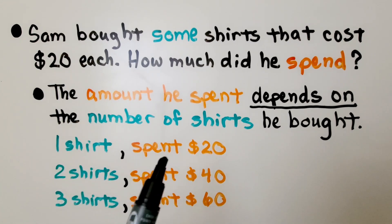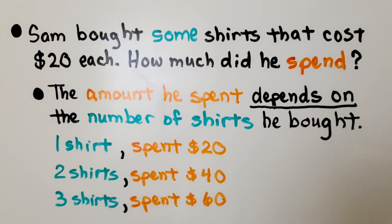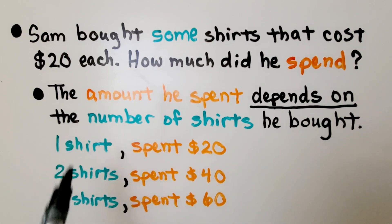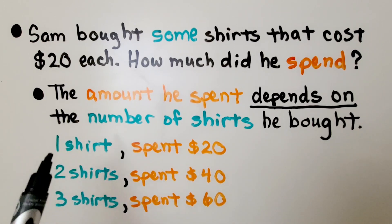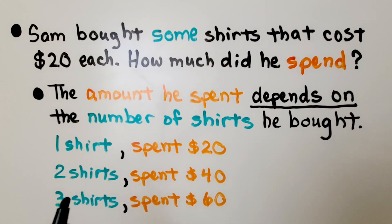If he bought one shirt, he spent $20. If he bought two shirts, he spent $40. And if he bought three shirts, he spent $60. The amount he spends depends on how many he purchased. The amount he spent is the dependent variable, and the number of shirts he bought is the independent variable.